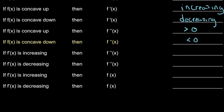If f prime of x is increasing, then its second derivative is what? If any function is increasing, then its derivative will be positive. f double prime is just a derivative of f prime, and the derivative of an increasing function will be greater than zero. If f prime is decreasing, then the second derivative will be negative — same concept. Don't be afraid of just dealing with a derivative as opposed to the base function.